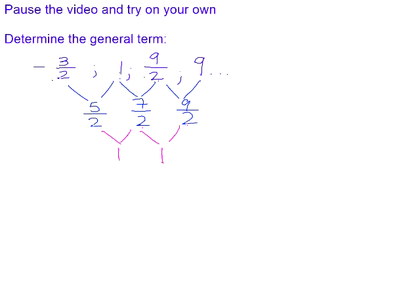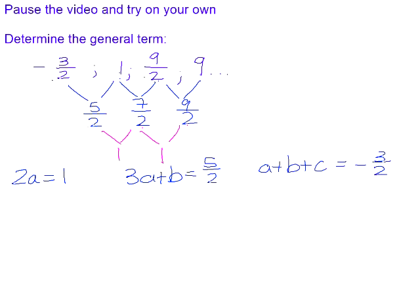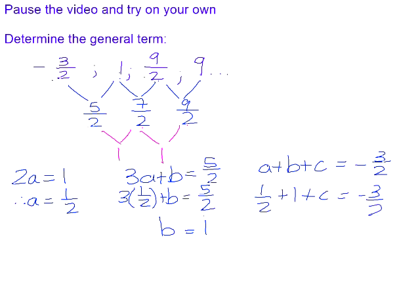We can now set up our three equations. Our constant second difference equals 1, our first first difference equals 5 over 2, and our first term equals negative 3 over 2. Therefore, 2a equals 1, so a equals one half. Substituting into the second equation: 3 times one half plus b equals 5 over 2, so b equals 5 over 2 minus 3 over 2, which gives b equals 1. Then substituting into the third equation to solve for c gives c equals negative 3. Therefore, the general term of this sequence is one half n squared plus n minus 3.